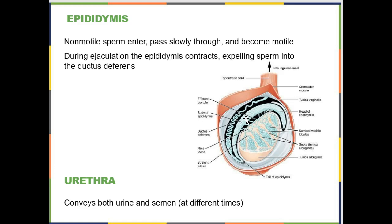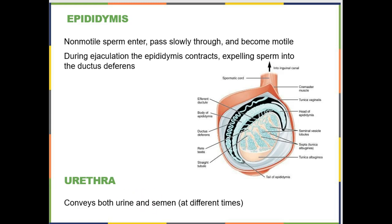Then during ejaculation, the ductus deferens is going to contract and the sperm will run through the ductus deferens and into the urethra. Those two structures we're not going to spend a lot of time talking about.